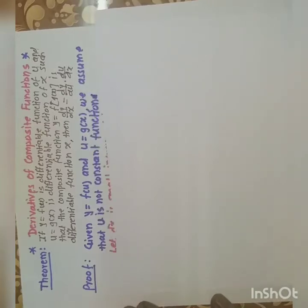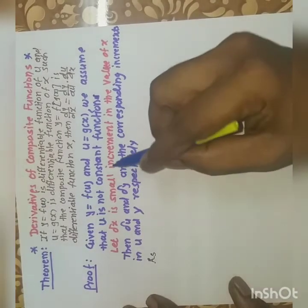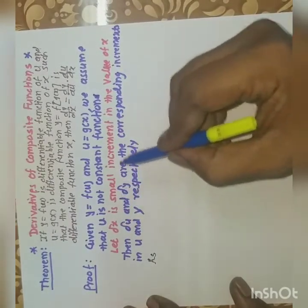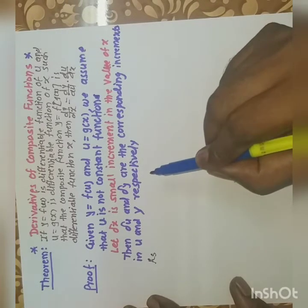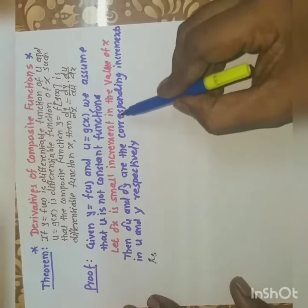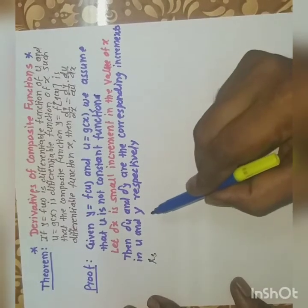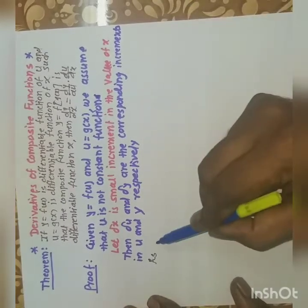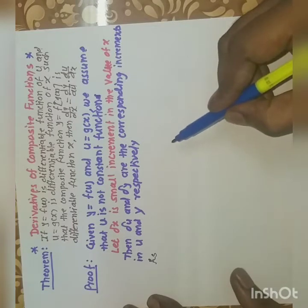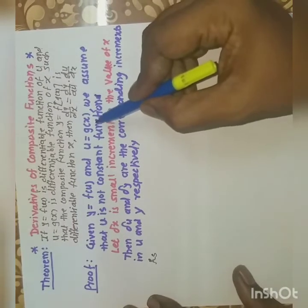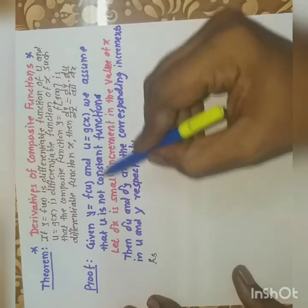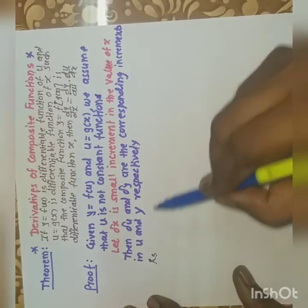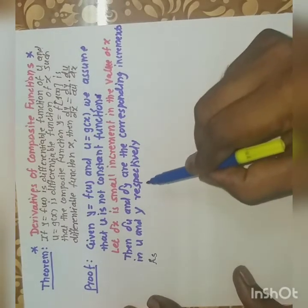Now, proof of this theorem. Here y = f(u) and u = g(x). We assume that u is not a constant function. Let delta x be the small increment in the value of x. Then delta u and delta y are the corresponding increments in u and y respectively. Because u depends on x — as x changes, u changes. And y depends on u — as u changes, y changes. If delta x is the small change in x, then u and y also change.